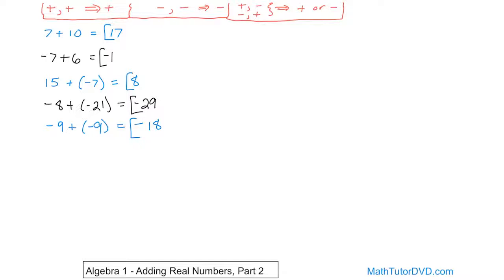Let's go over here and continue. We have negative nine plus five — a negative plus a positive. Anytime you're adding mixed signs, you just subtract the numbers. Nine minus five gives you four. Now we pick the sign: negative nine has the bigger absolute value, so the answer is negative four.